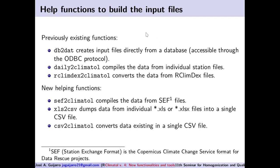There are helper functions to build these input files. The previously existing functions include DB2DAT, which creates input files directly from a database accessible through the ODBC protocol; Daily to Climatol, for when your data is in individual station files; and RCLINDEX to Climatol, which converts data from RCLINDEX files. New helper functions include CEF to Climatol, which compiles data from CEF files — the format for the Copernicus Climate Change Service for data rescue projects; Excel S to CSV, which dumps data from individual Excel files into a single CSV file; and CSV to Climatol, which converts data in a single CSV file to the input format required by Climatol.